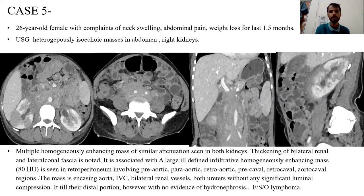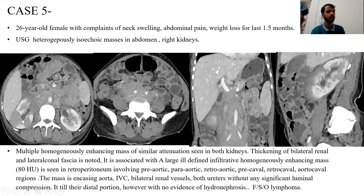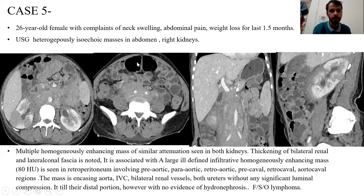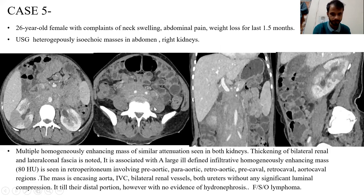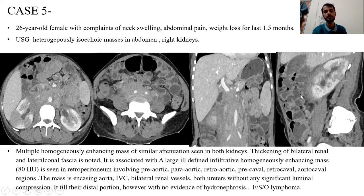Case 5: A 26-year-old female with neck swelling, abdominal pain, and weight loss for the last one and a half months, with heterogeneous isotopic masses in the abdomen, peritoneum, and right kidney on ultrasound. CT shows a heterogeneous enhancing mass within the right kidney, with similar masses in the peritoneum and retroperitoneal region. The mass is seen encasing the IVC and aorta and occupying most of the abdomen. Multiple heterogeneous enhancing lymph nodes are seen in the peritoneum and retroperitoneum. Cervical lymph nodes were also involved. This is a case of disseminated lymphoma involving the kidney.